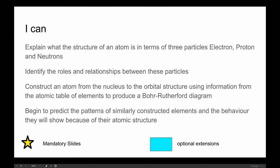You're going to have to be able to construct an atom showing me the orbital structure from the atomic table of elements to produce a Bohr-Rutherford diagram. And you're going to be able to begin to predict the patterns of similarly constructed elements and their behavior they will show because of their atomic structure.